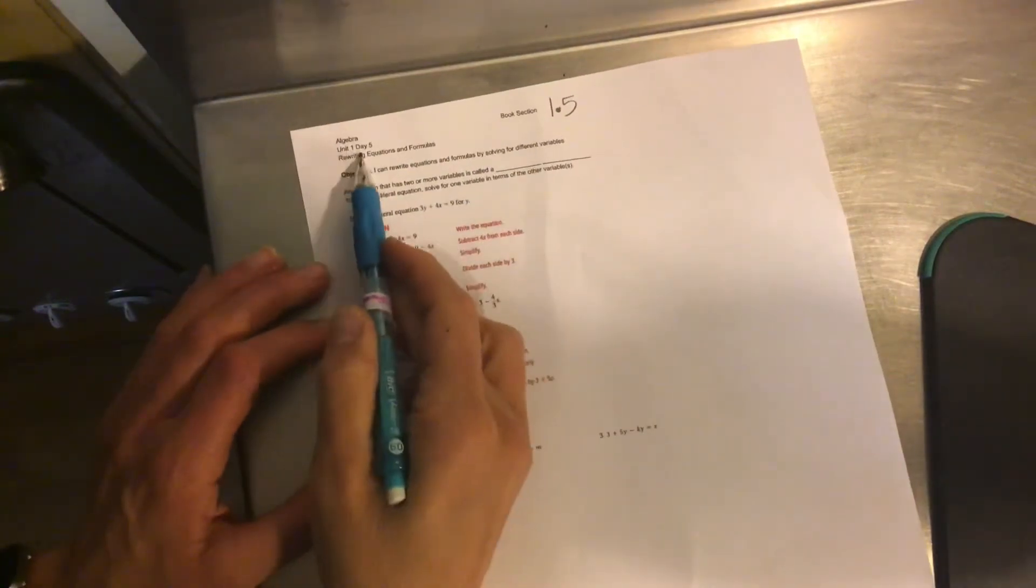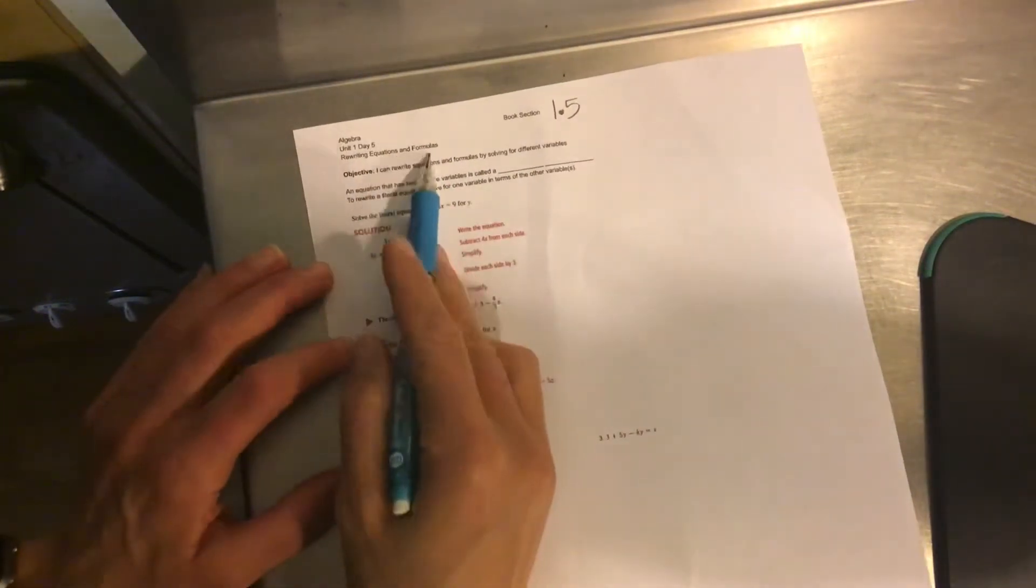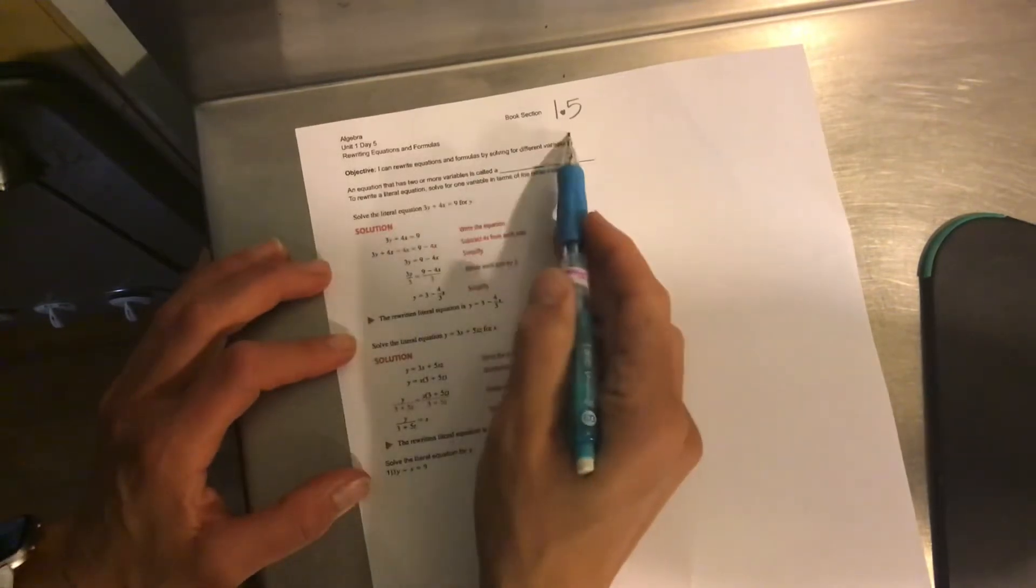Right, algebra. We've got unit 1, day 5, rewriting equations and formulas, and that's book section 1.5.